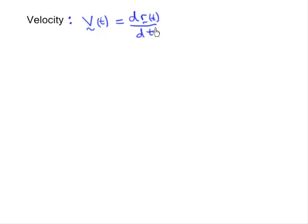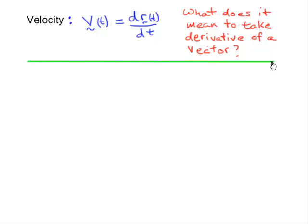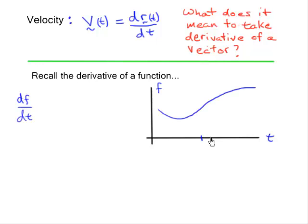The first question you might ask is: what does it mean to take a derivative of a vector? If that question has not crossed your mind, it should, because it's not trivial. So when thinking about how you take a derivative of a vector, I'm going to go back to something we know — something that's easy to take a derivative of — that is, the derivative of a function. Let's say I have this function of time, I'm calling it f.